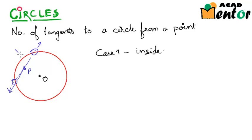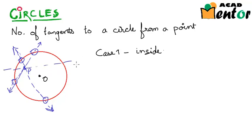Let me draw another line passing through point P — you will see that it also cuts the circle in two points and is a secant. So when the point is inside the circle, we will have no tangents possible.